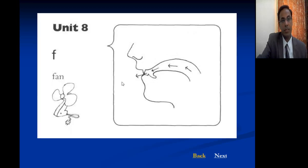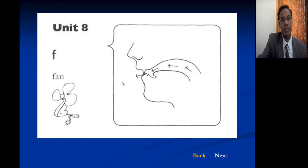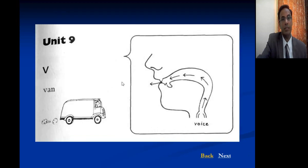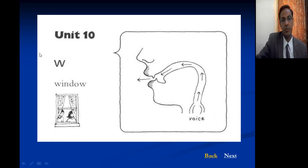The difference between those two sounds is voicing: one is voiceless and one is voiced. Here you can see an approximant — approximation at the back of the tongue. Look at this diagram for the W sound.